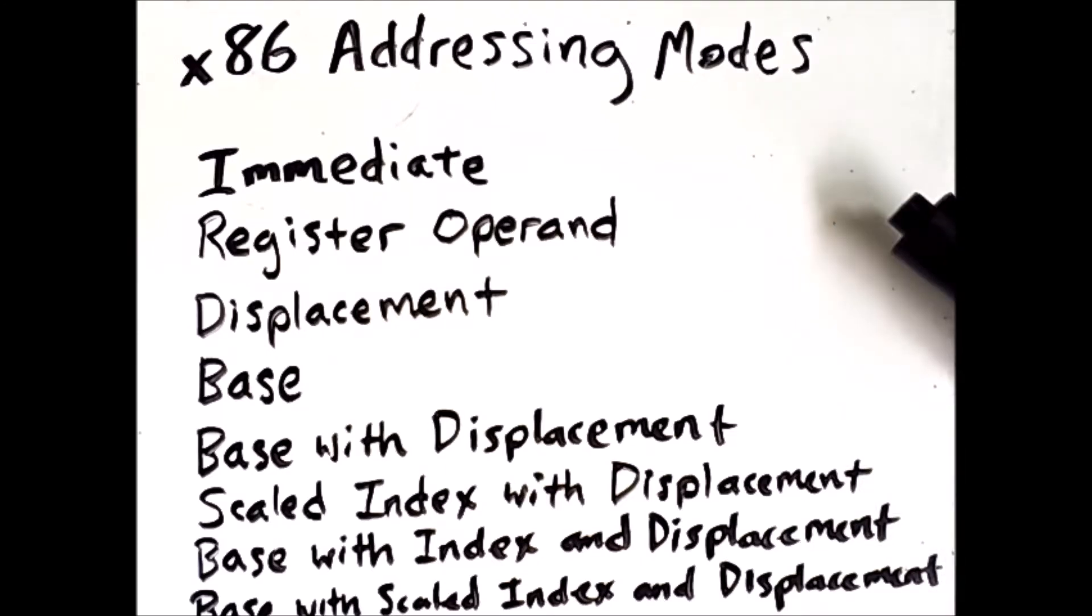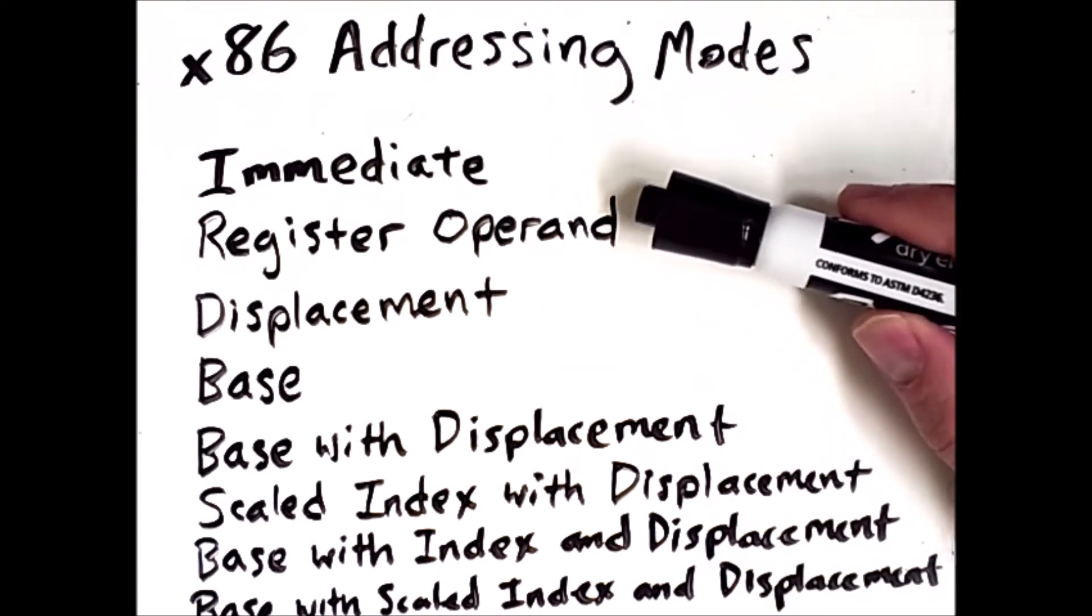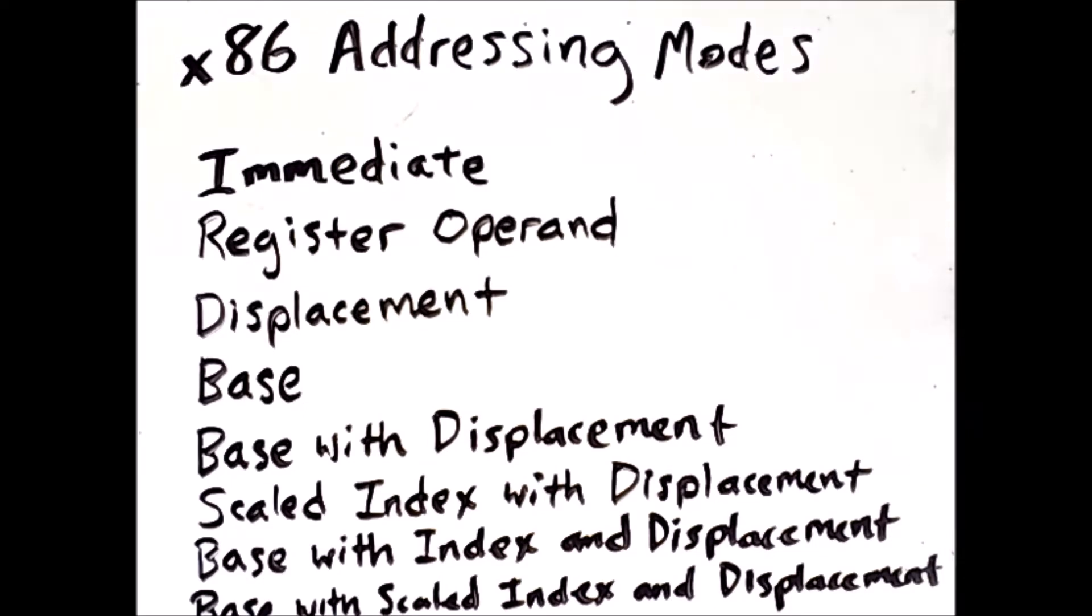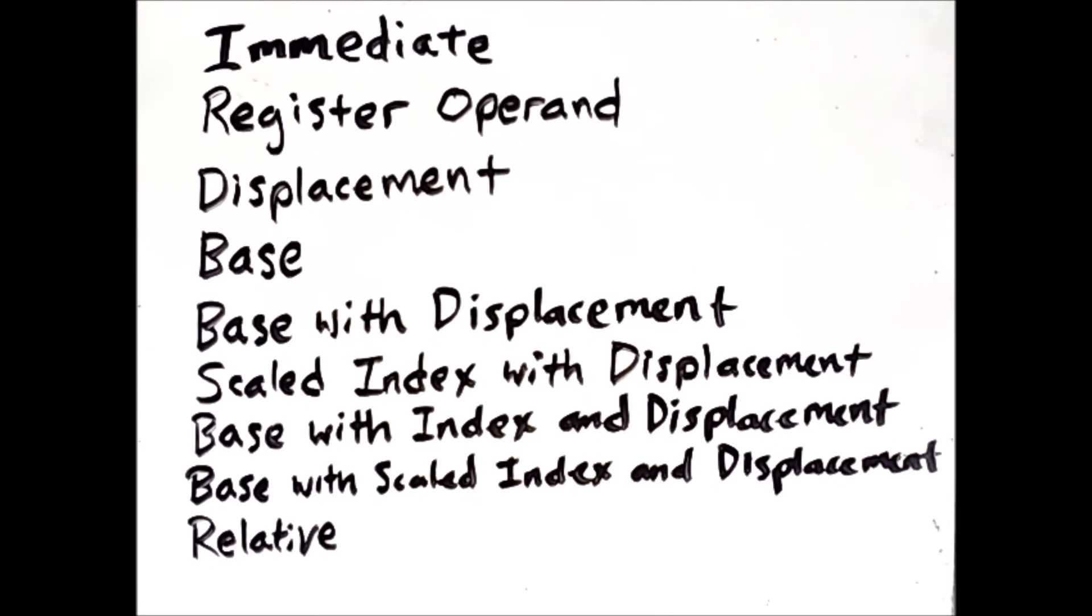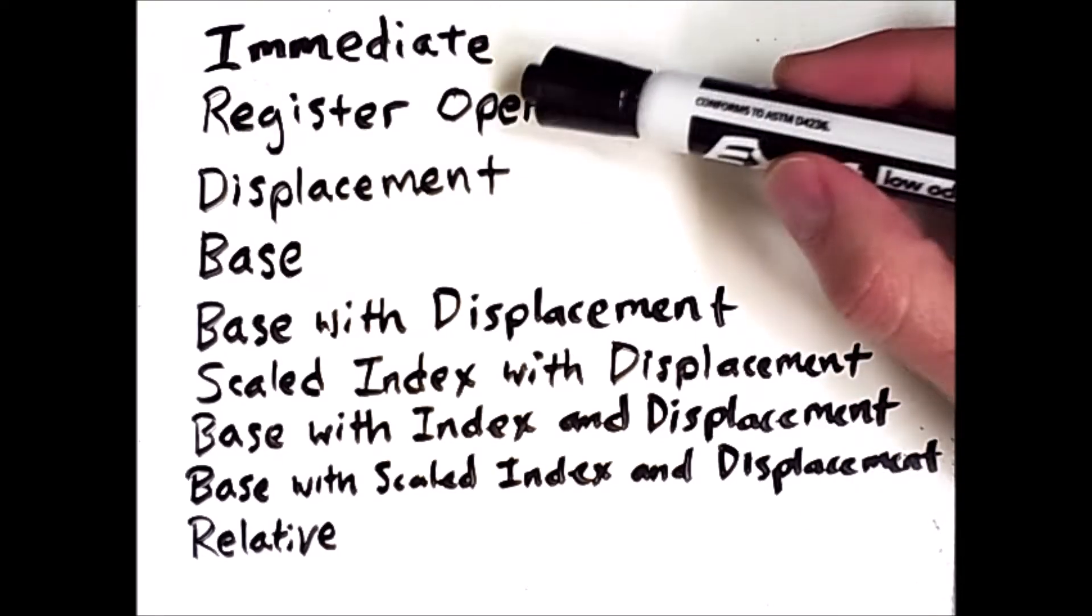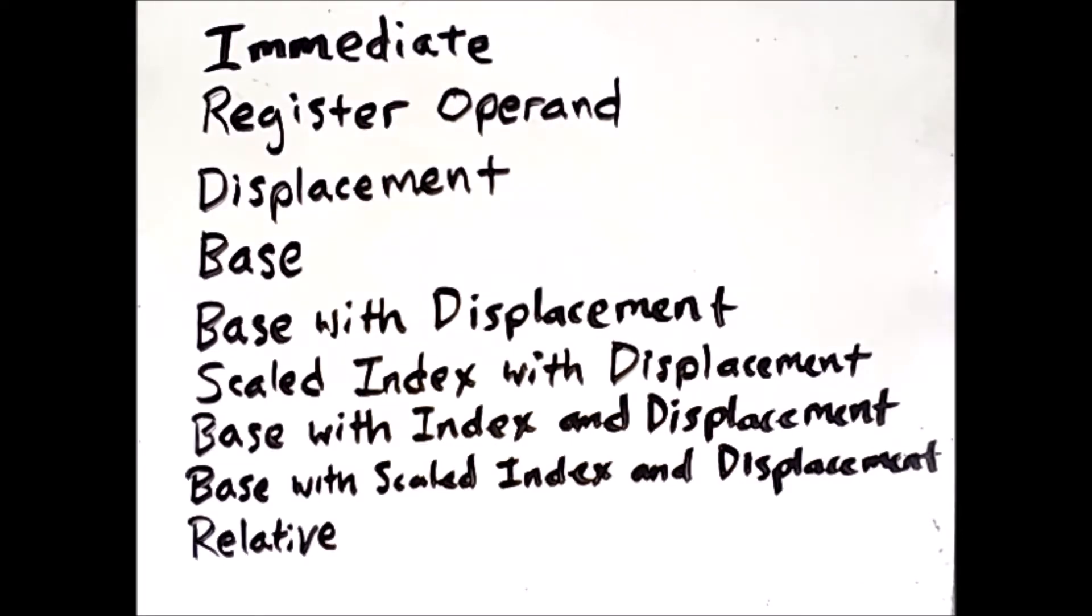This video will discuss the addressing modes of the x86 assembly language. You'll see that the first few are similar to the addressing modes we discussed in assembly languages in general, but as we move down this list, things get a bit more specific and complicated. The first two, immediate and register operand, are really identical to examples we saw in our video about general addressing modes, so I'm going to skip those and go straight to the ones that are interesting.